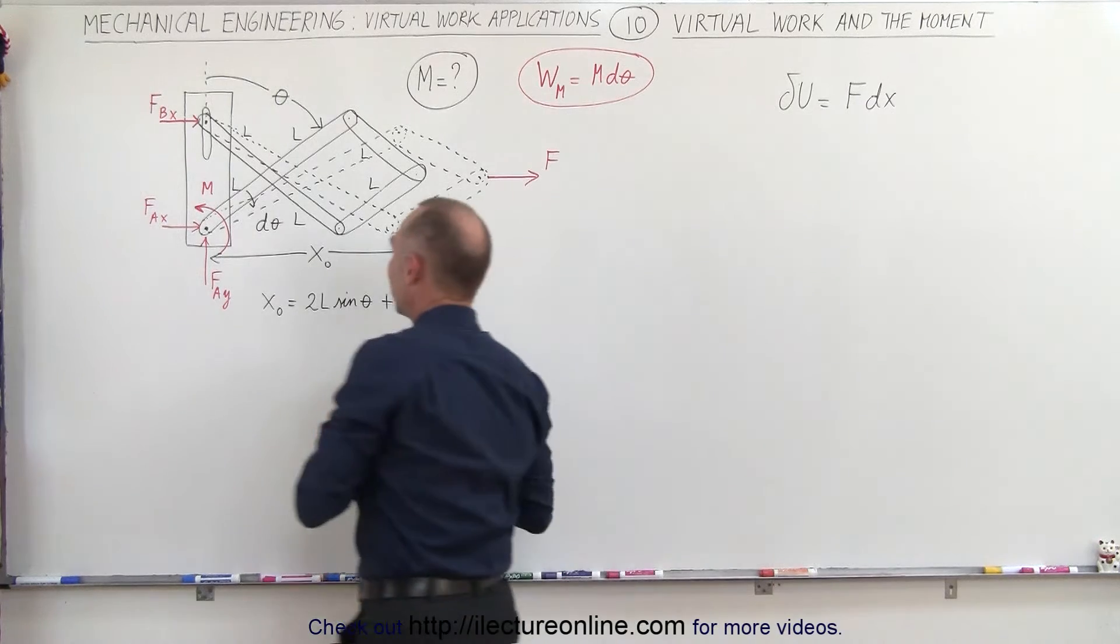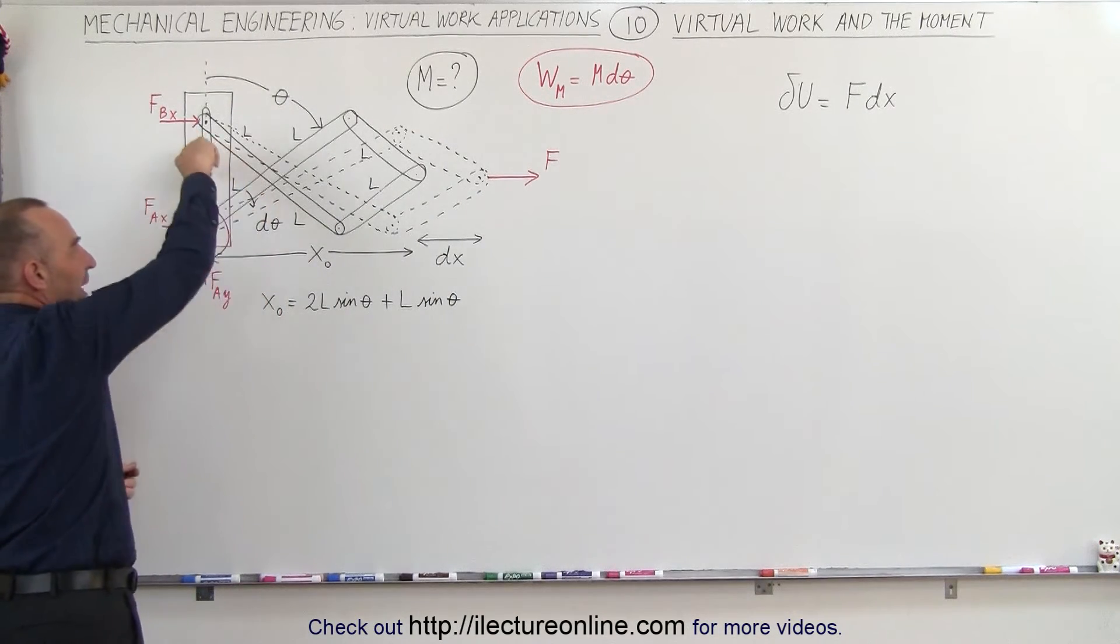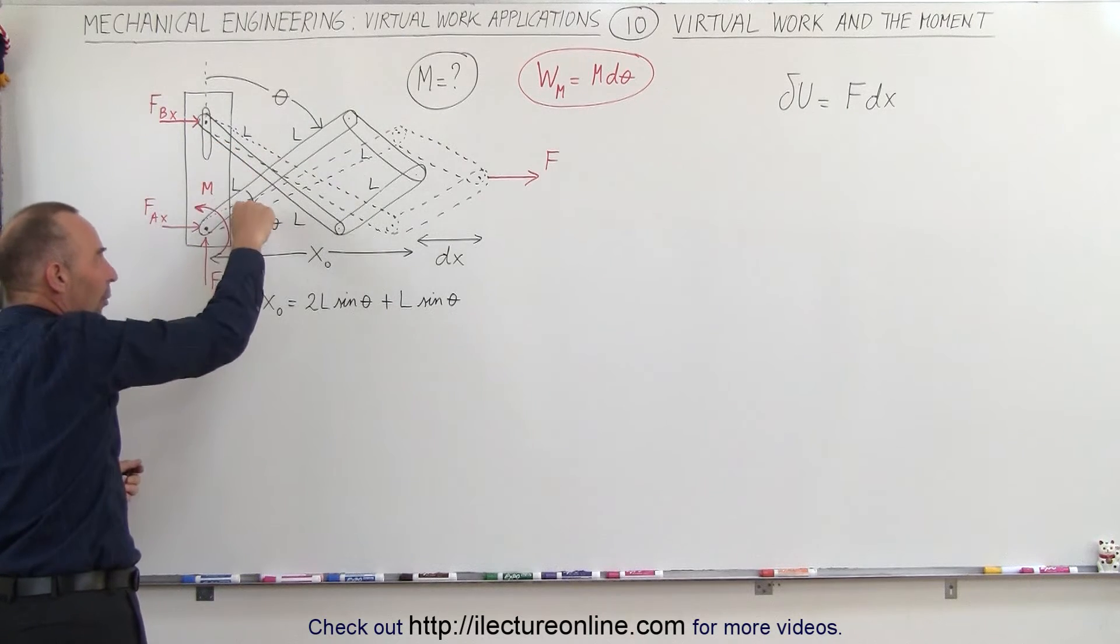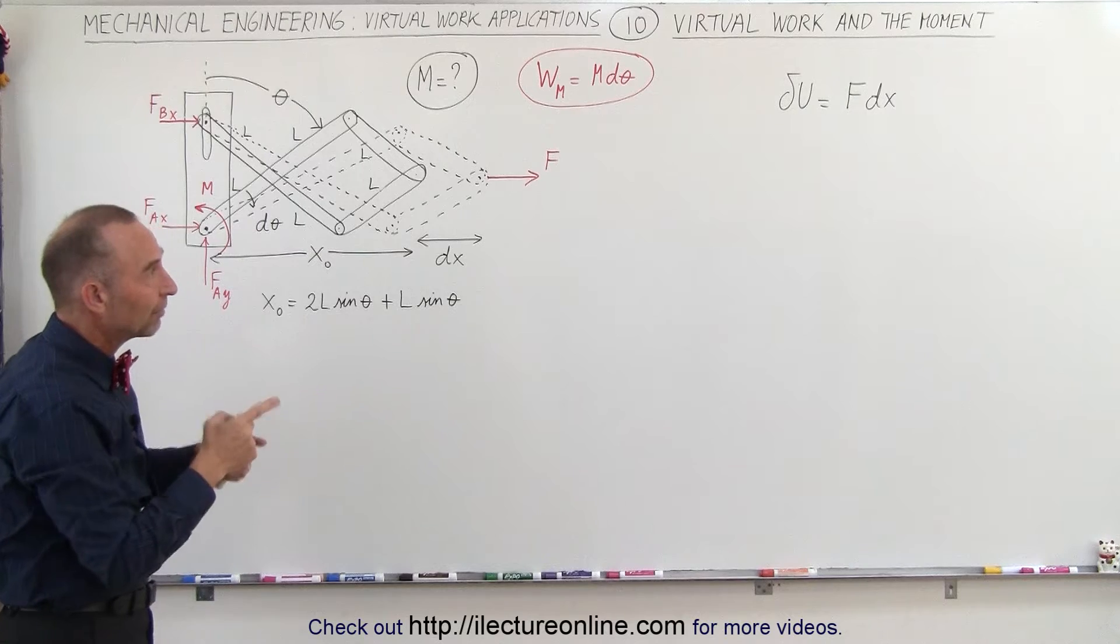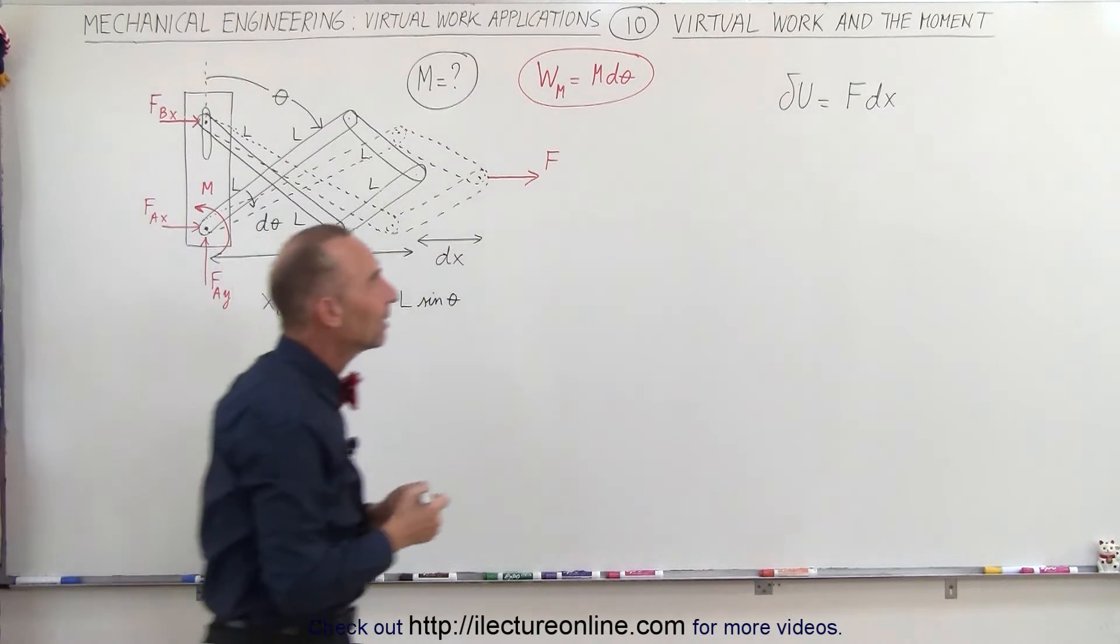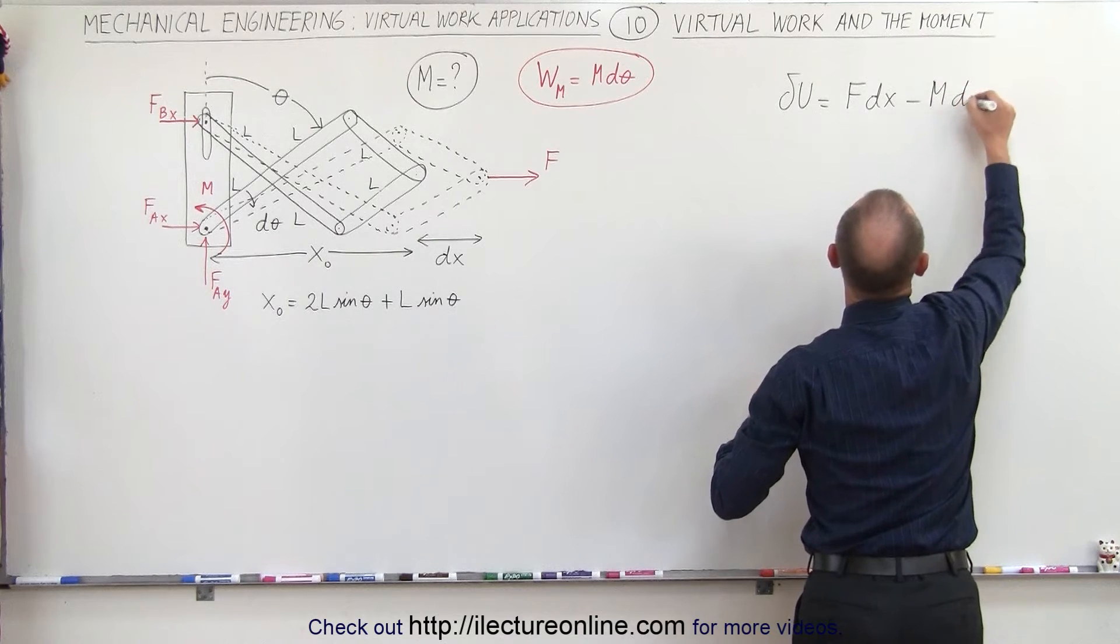Now here notice that the moment is in a counterclockwise direction and the change in the angle is in a clockwise direction so they're opposite to one another, so therefore we have the cosine of 180 degrees, basically a negative one, so that becomes minus M times dθ.